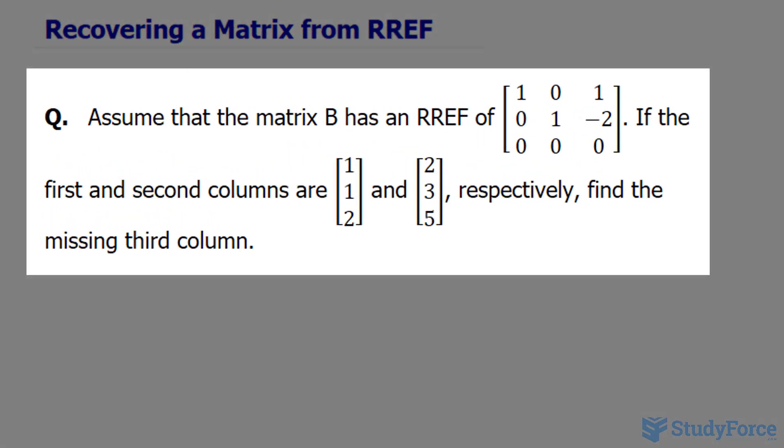The question reads, assume that the matrix B has a row-reduced echelon form of the following. If the first and second columns of matrix B are these two, respectively, find the missing third column.